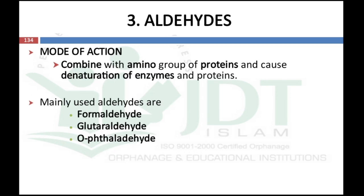The third group is aldehydes. Aldehydes kill microorganisms by combining with amino groups of proteins, causing denaturation of enzymes and proteins. The mainly used aldehydes are formaldehyde, glutaraldehyde, and orthophthalaldehyde.